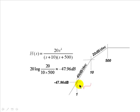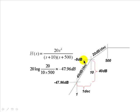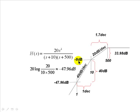Once we have that, we find out how many decades we move to the right. In this case, from 1 to 10, that is one decade. Being that we are climbing at a rate of 40 decibels per decade, we climb up 40 decibels. Negative 47.96 plus 40 decibels gives us approximately negative 8 decibels. Then, up to the next kink, there are 1.7 decades between 10 and 500 radians per second. At a rate of 20 decibels per decade, that is a climb of 34 decibels. Negative 8 plus 34 is 26 decibels. And we have the amplitude Bode plot.